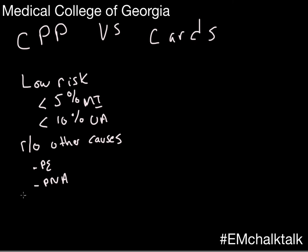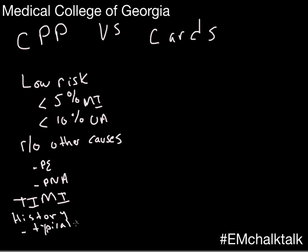Once you've ruled out alternatives, you look to see if they are low risk. You can use risk factors — the TIMI score looks at risk factors, but it's not a really helpful marker for most people. History is one of the best markers. If someone has atypical-sounding chest pain, not the classic angina presentation, they are more likely to be low-risk. Patients whose pain has been going on for hours and hours are also unlikely to have unstable angina or acute MI.